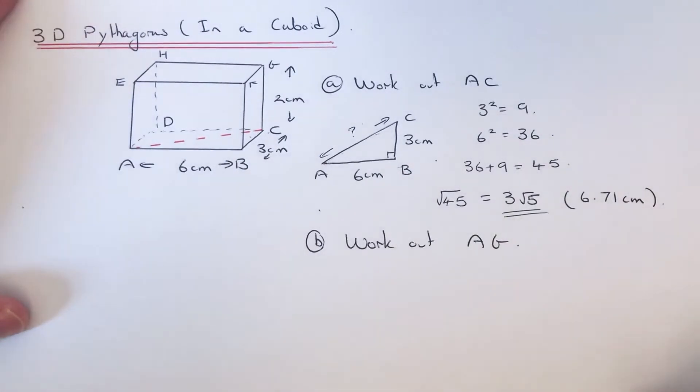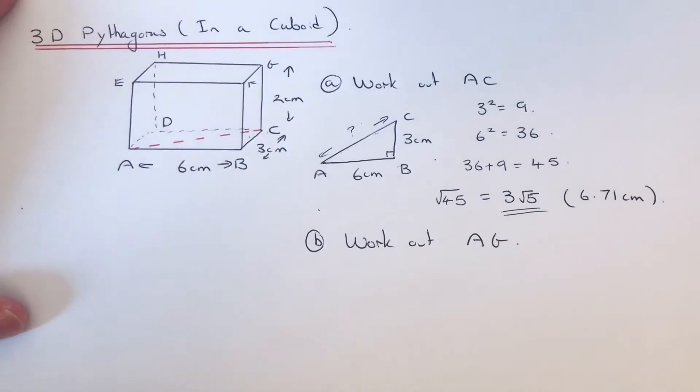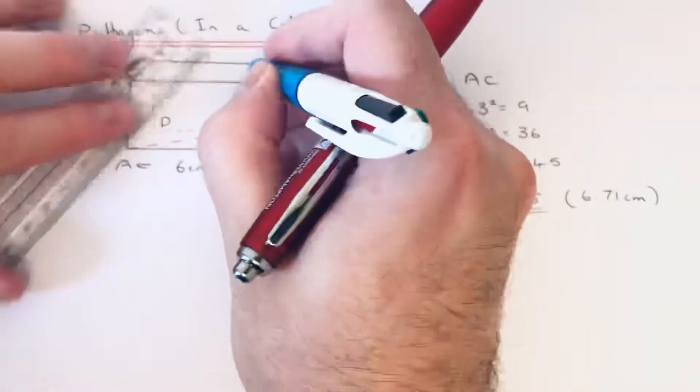Let's have a look at part B then. We've got to work out A to G, so again I'm just going to mark that in the diagram, A to G.